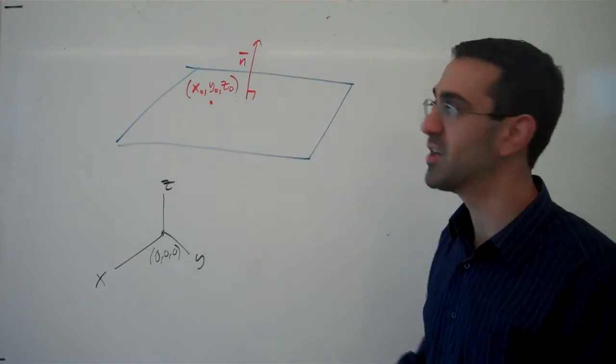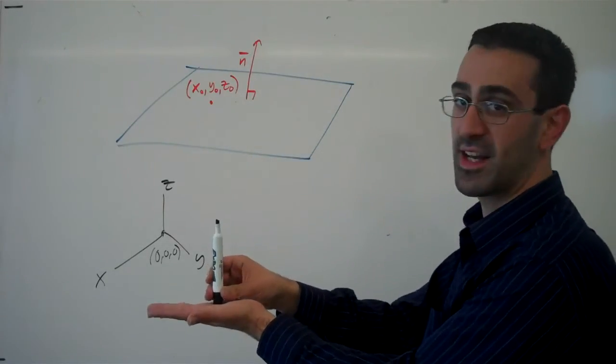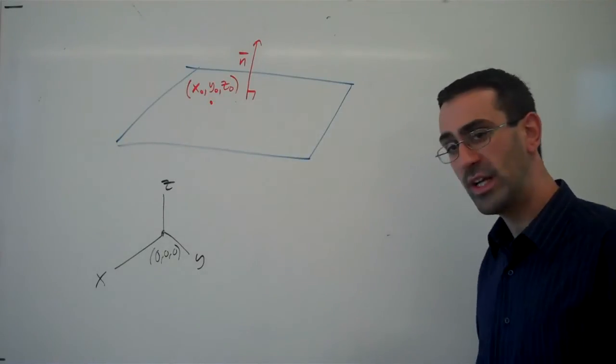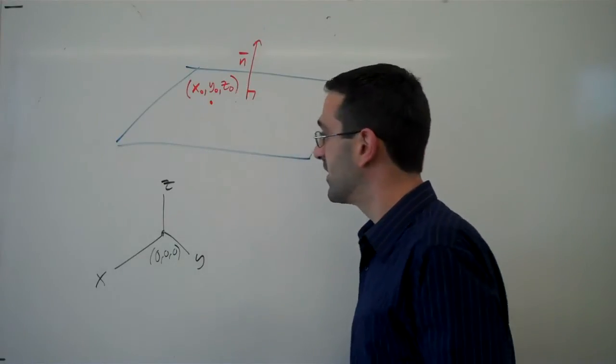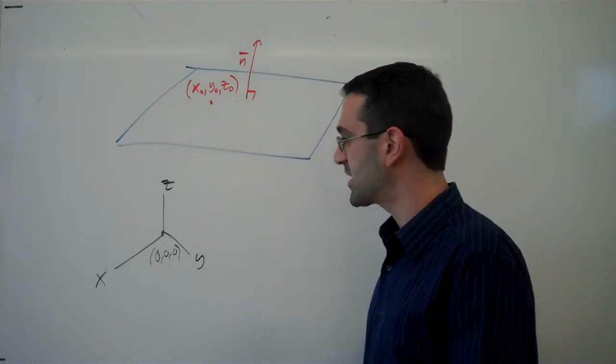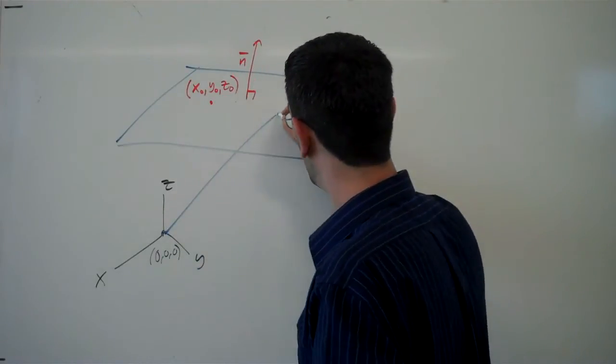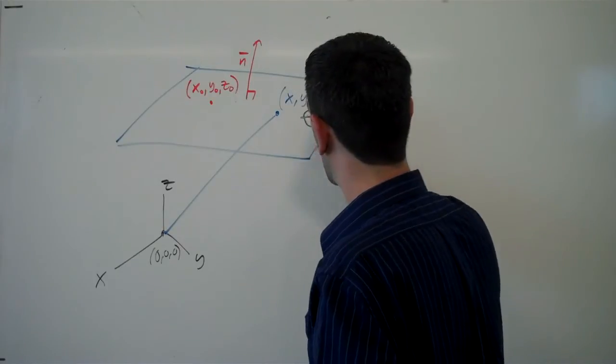And we know a normal vector. We know a vector that is perpendicular or orthogonal to the plane, at a right angle to the plane. So we're going to try to come up with an equation for this plane. We're going to introduce a position vector here, a vector from the origin out to any old point on the plane, any old point x, y, z.